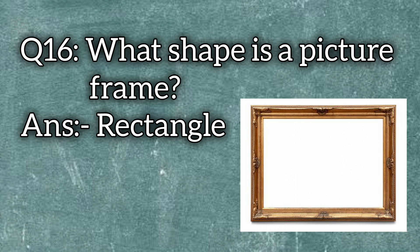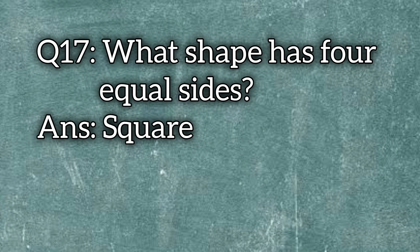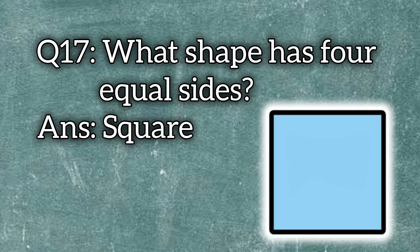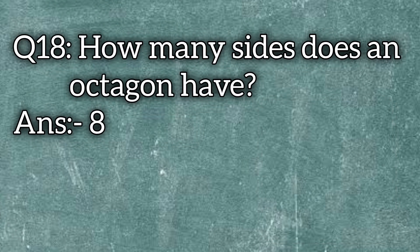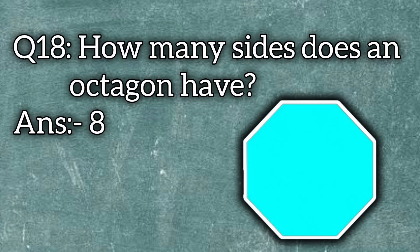What shape is a picture frame? The answer is rectangle. What shape has four equal sides? Square. How many sides does an octagon have? The answer is eight.